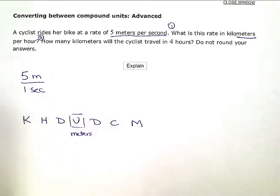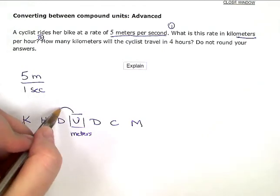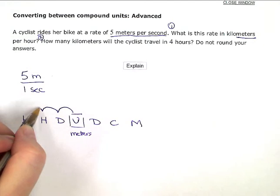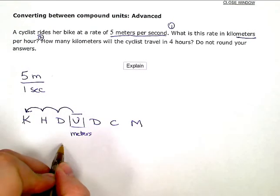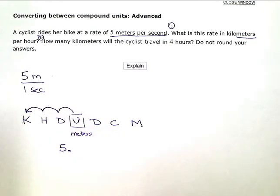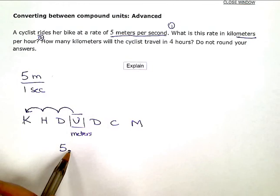And I want to go to kilo, the K, for kilometers over here. So to do that, I have to jump one, two, three spots to the left. So to change five meters to kilometers for a regular five, my decimal starts there.